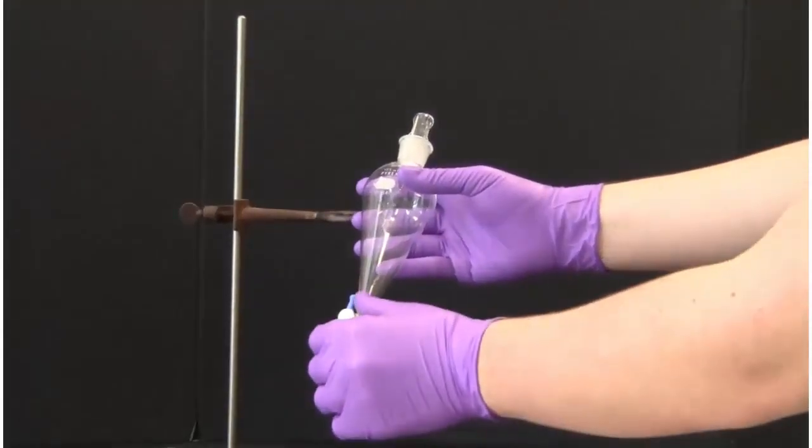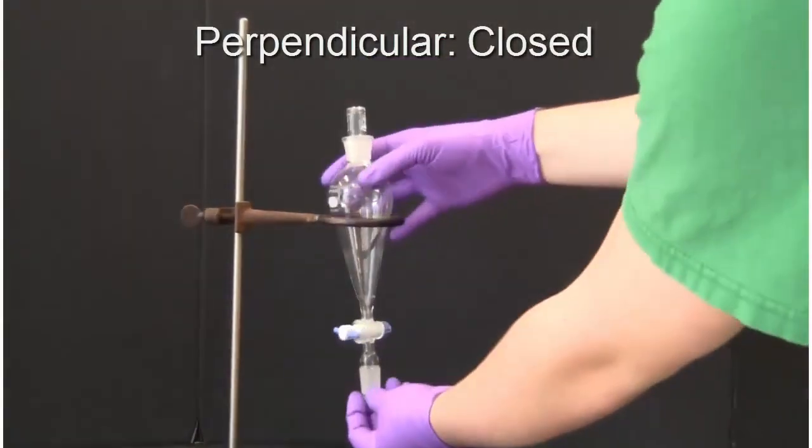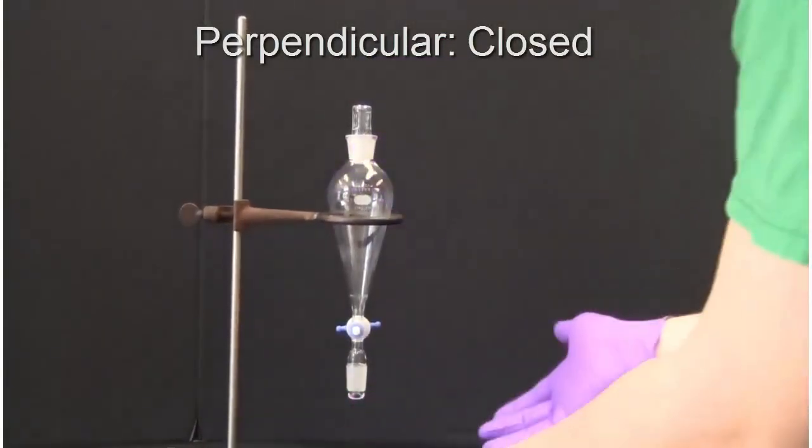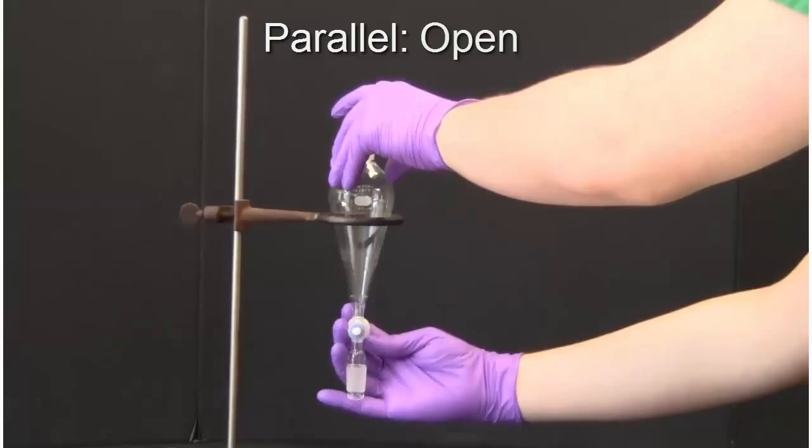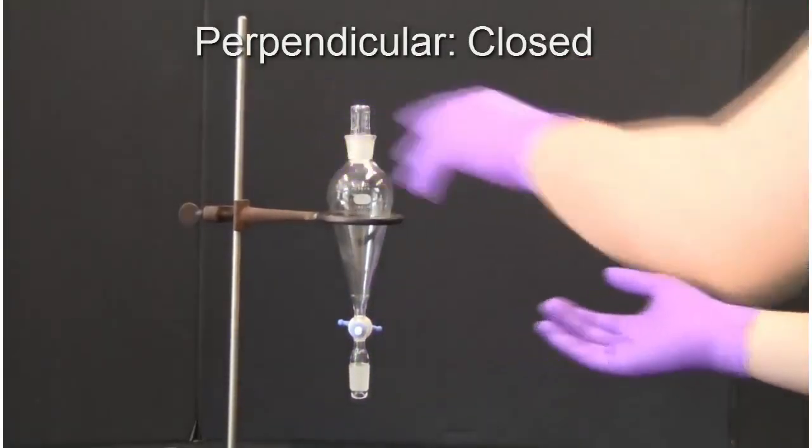The separatory funnel is placed in the iron ring stand with the stopcock at the bottom of the funnel in the closed position. Double check your stopcock before adding liquids to avoid leakage. The stopcock is closed when the valve is perpendicular to the neck.